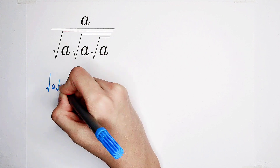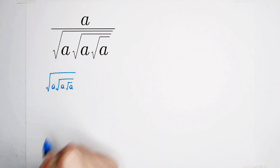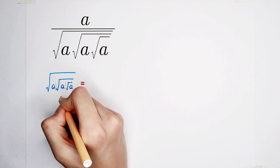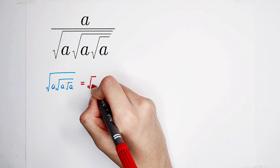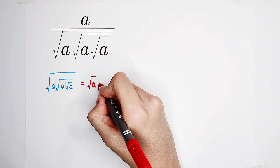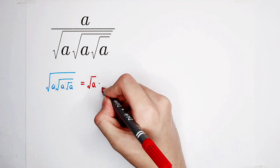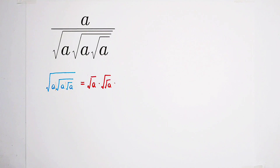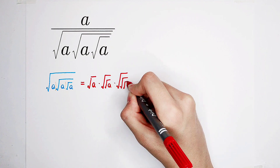Square root of a times square root of a times square root of a. Of course, it can be written as — we can separate these three a's. How many square roots does our first a have? One. So our first a can be written as square root of a. And how many square roots does our second a have? Two — here and here. So it is square root of square root of a. How many square roots does our third a have? Three. It is square root of square root of square root of a.